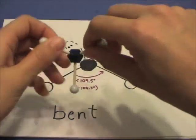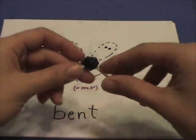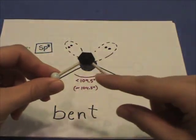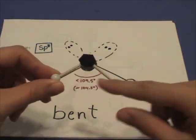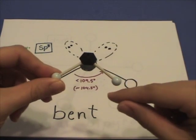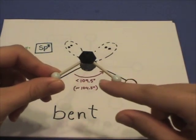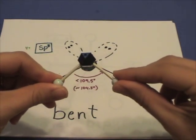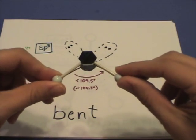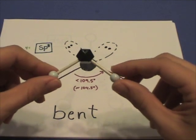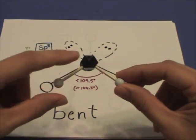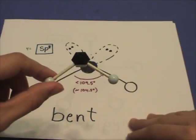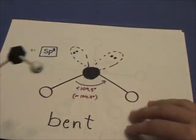If one of these sigma bonds is instead a lone pair of electrons, then the molecular shape is bent with less than 109.5 degree bond angles. This central atom is still sp3 hybridized.